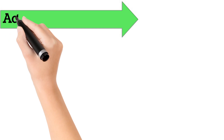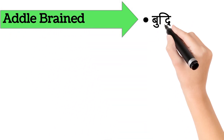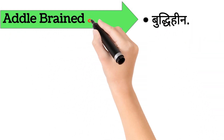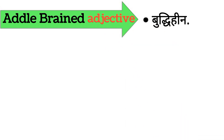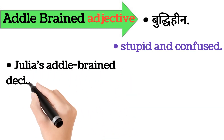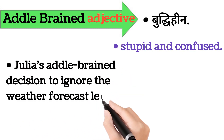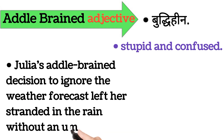Addle-brained. Addle-brained ka aarth hai buddhi heen. Addle-brained word adjective form mein aata hai. It's also called stupid and confused. Iska example hai: Julia's addle-brained decision to ignore the weather forecast left her stranded in the rain without an umbrella.